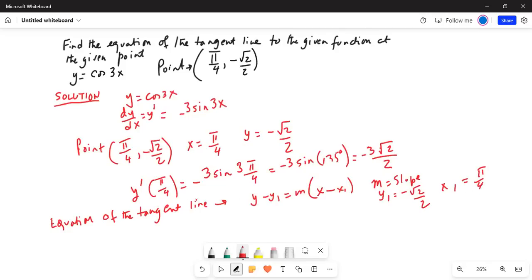So this will be then y plus, so minus and minus becomes a plus, square root of 2 over 2 is equal to this slope. So slope is minus 3 square root of 2 by 2 times x minus pi by 4. And we will do some simplification to this.